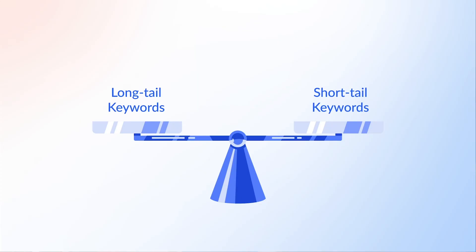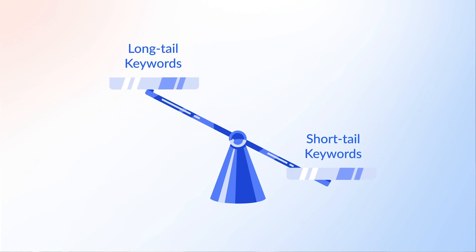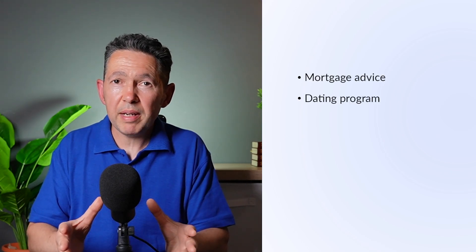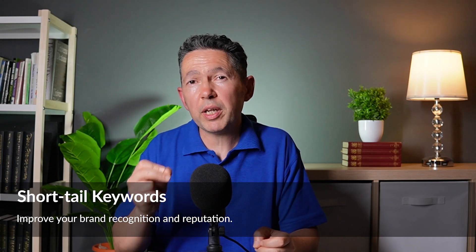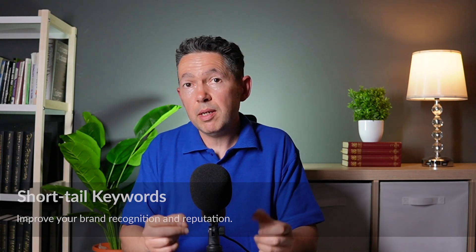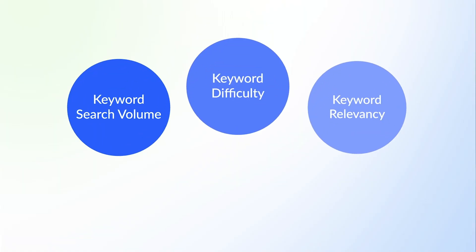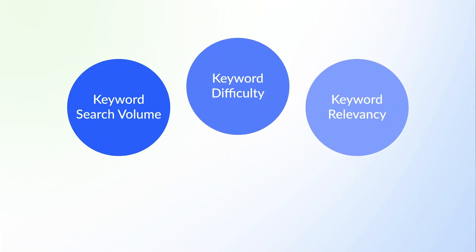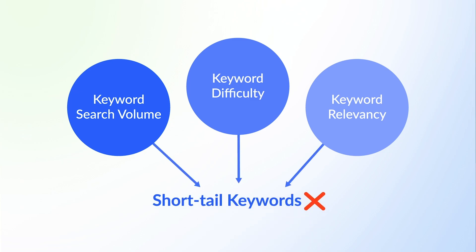When it comes to choosing between these two types of keywords, one clear advantage of short tail keywords is that they are usually evergreen. Things like 'mortgage advice,' 'dating program,' and 'investing tips' are always going to be popular. Short tail keywords can also improve your brand recognition and reputation — imagine ranking first for 'insurance' or 'mortgage.' And they can, of course, bring an enormous amount of organic traffic to your website. However, when you consider all three keyword attributes, which is the basis of how we select and prioritize keywords, short tail keywords don't make the cut.